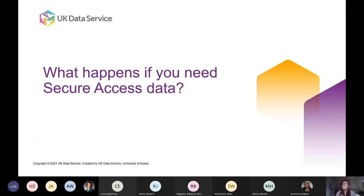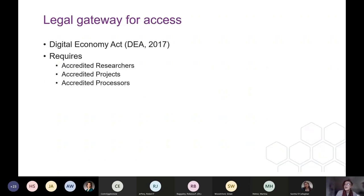I'm now going to move on to what happens if you need secure access data. Access to secure access datasets is through the Digital Economy Act 2017, or the DEA for short. The DEA requires both researchers and their projects to be accredited, and researchers must be accredited before they can have access to their project. The point of access also needs to be accredited as a processor, and the UK Data Archive was accredited as a processor by the Statistics Authority in 2020.